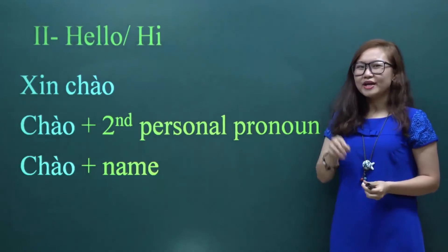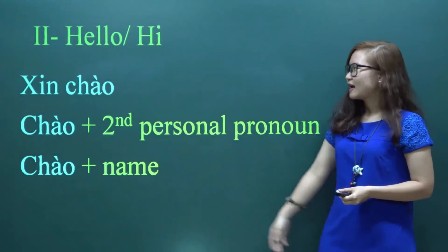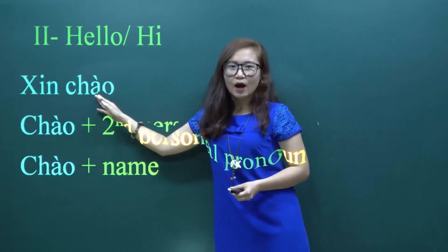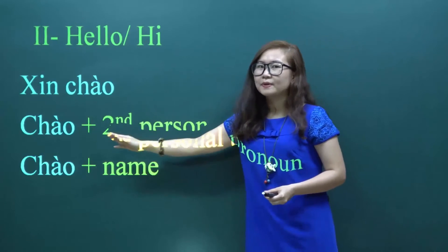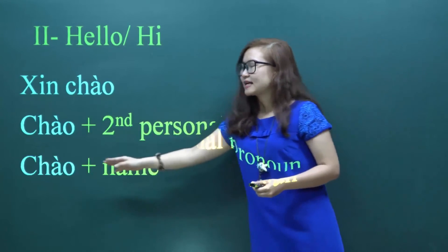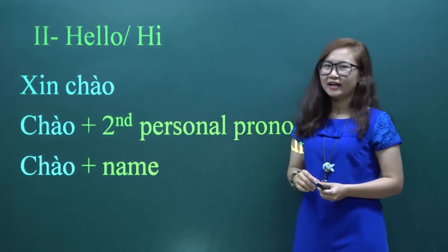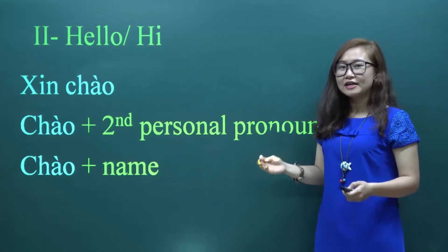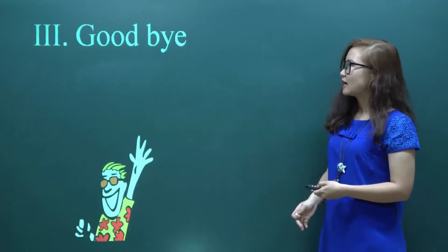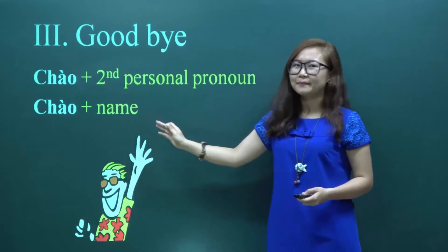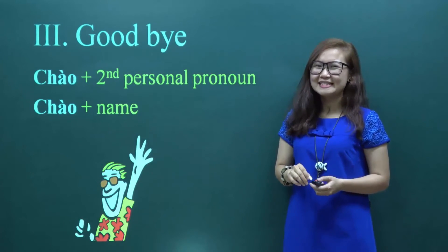So in short, there are three ways to say hello in Vietnamese. The first way is to say 'Xin chào.' The second way is to say 'chào' plus a suitable second personal pronoun. And the last way is to say 'chào' and add the name of the person you are talking to, for example 'Chào Hạnh.' That is the end of the second part of our lesson today. Let's move on to the last part: how to say goodbye.